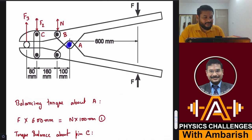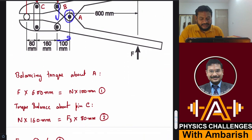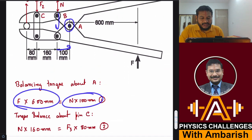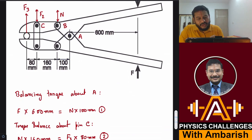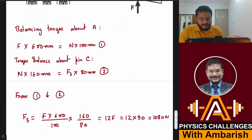So F into 600 mm. I am considering this link. F into 600 mm is the clockwise torque due to F, and this should equal, let us say the action-reaction here is N, so this should be N into 100 mm. Balancing the torque about pin A, F into 600 equals N into 100. Now I can also balance the torque for this link about pin C. Here the torque due to N is N into 160, and the torque due to F' is F' into 80. So N into 160 equals F' into 80.